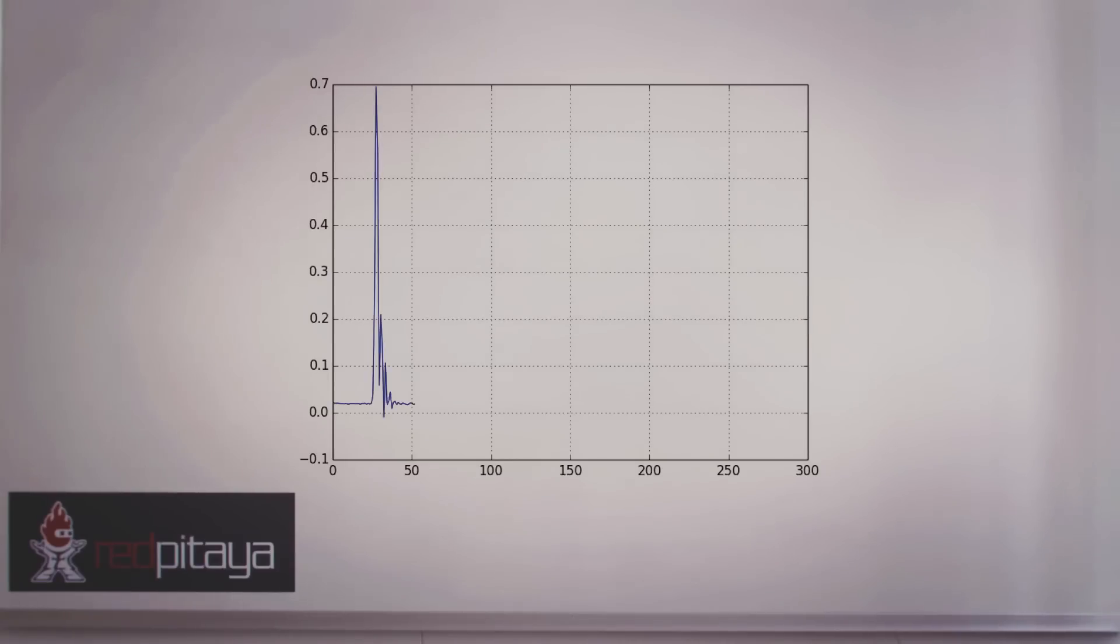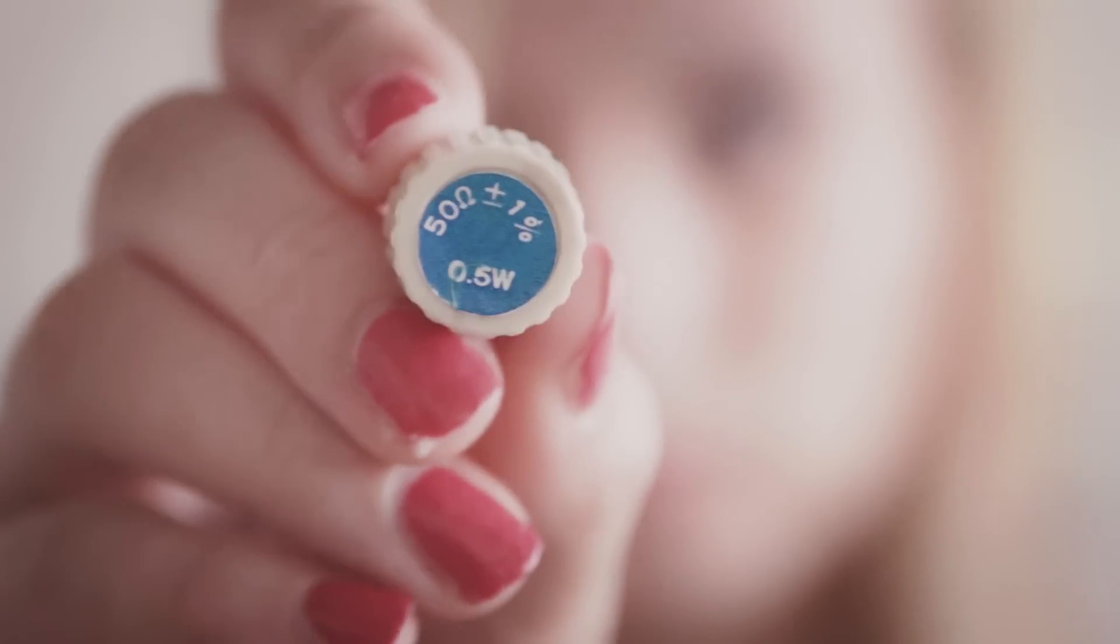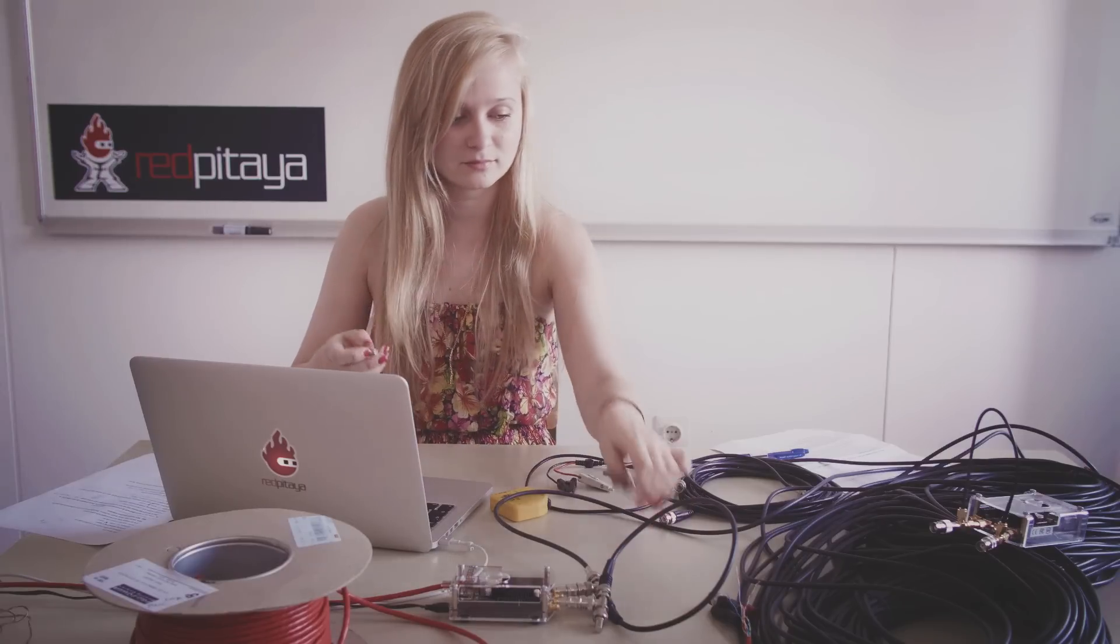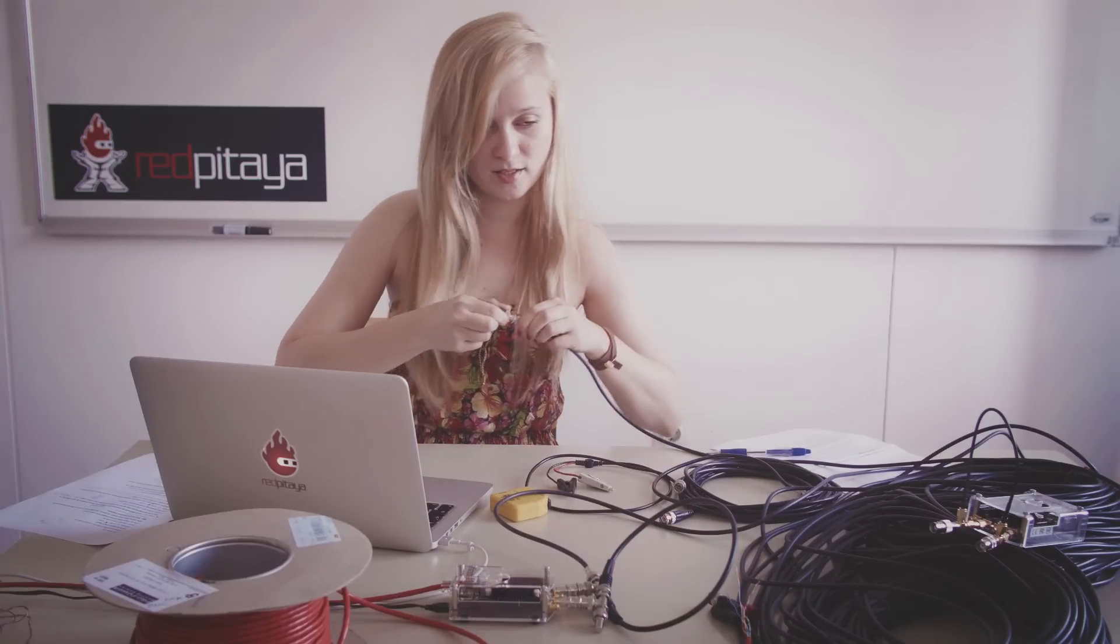If the line is terminated with its characteristic impedance, there shouldn't be any reflection. This is the 50 ohm terminator. Let's attach it on the other end of the cable.